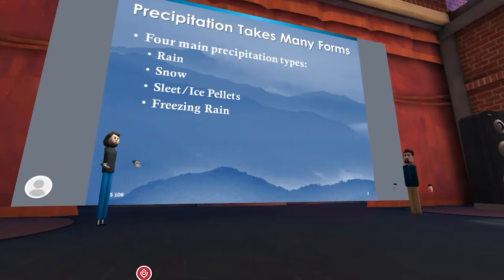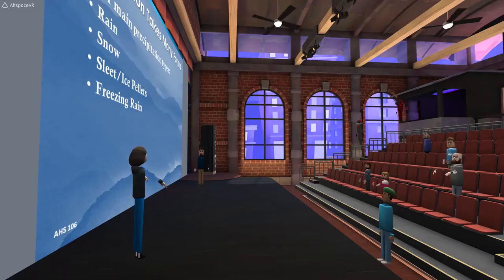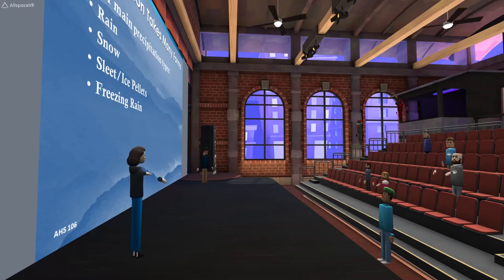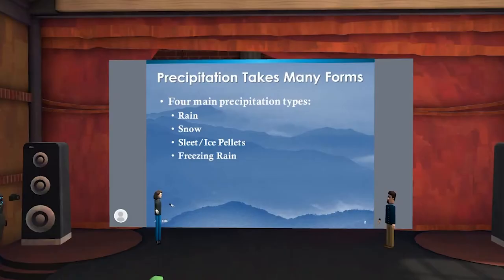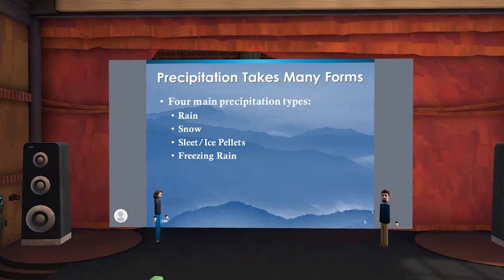One really important thing to remember for this lecture is that what determines what type of precipitation hits you is going to be the temperature profile underneath the cloud deck. It influences how precipitation particles falling out of the base of the cloud respond and change phase over time.